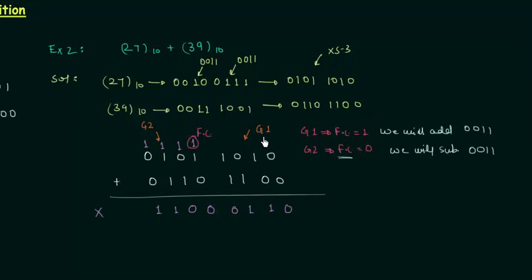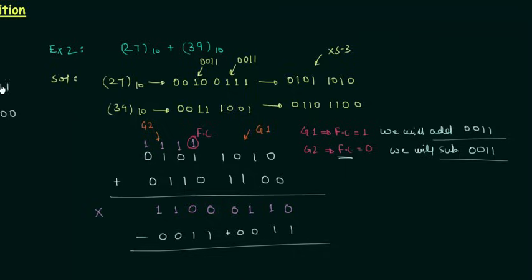So let's do it. For group 1 we have final carry equal to 1, so we will add 3. For group 2 the final carry is equal to 0, so we will subtract 3. For the addition: 0 plus 1 is 1, 1 plus 1 is 0 with carry equal to 1, we have 0 with carry equal to 1. So we have 1001 as the result of the addition for group 1.